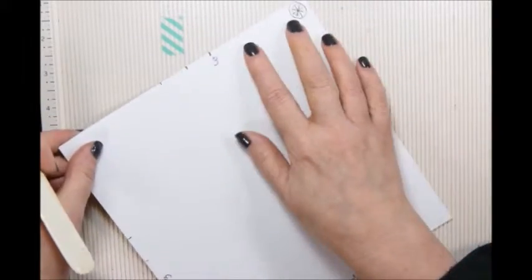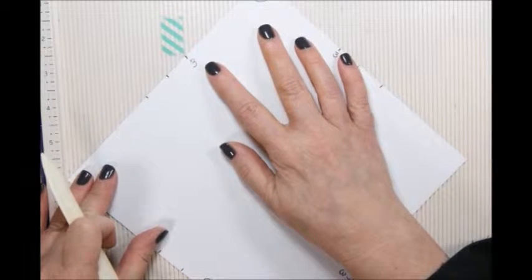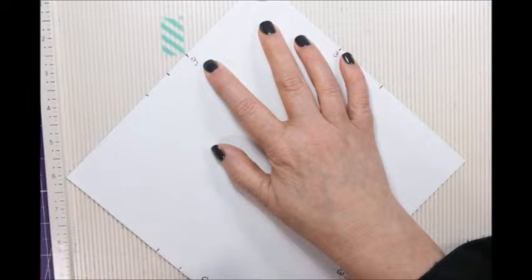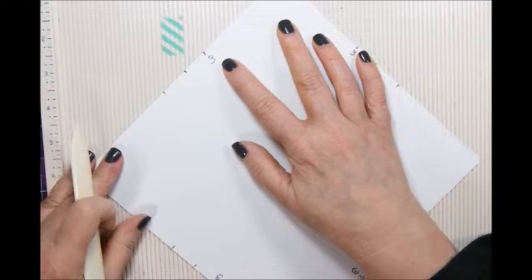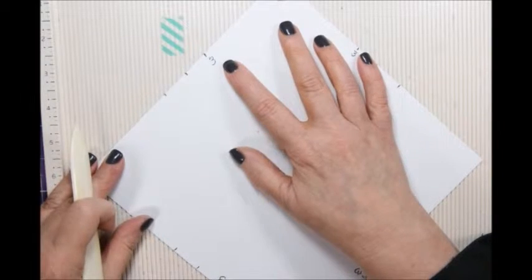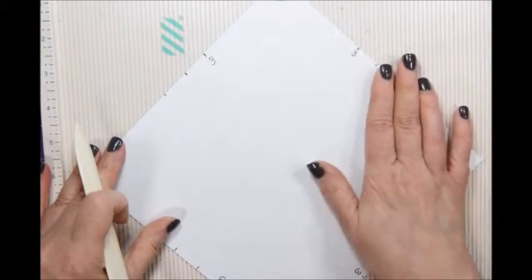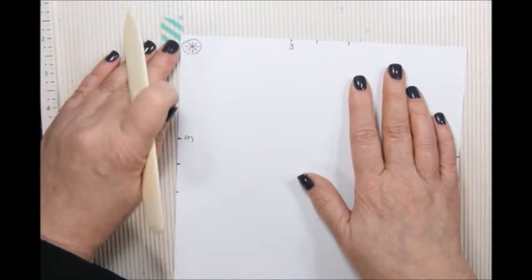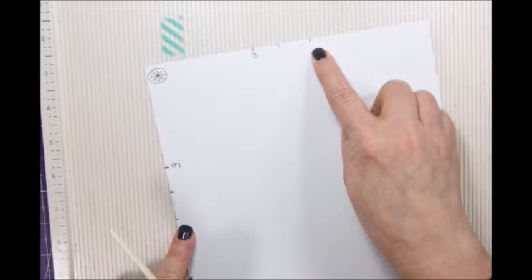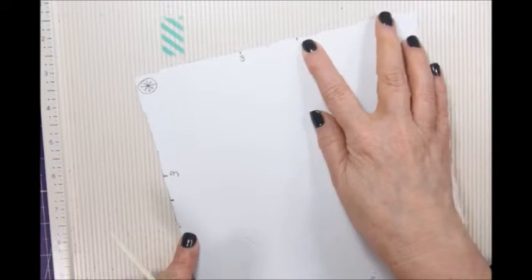So opposite corners, three to three. Line those up on the same little line there. Three to three. And then three fourths to three fourths. Now on the same corner, I'm going to line up the four and five eighths marks. So I'm not doing opposite corners. I'm keeping it on that same corner.